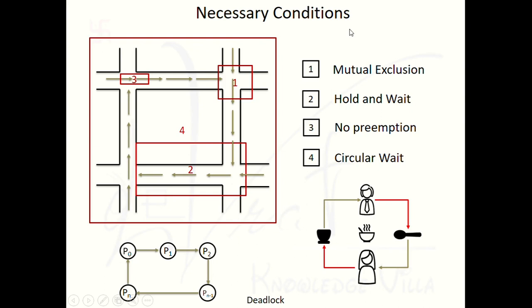There are total four necessary conditions to occur the deadlock. Those are mutual exclusion, hold and wait, no preemption, and circular wait. Let's start learning all these necessary conditions.